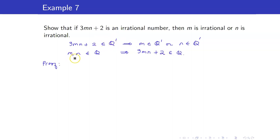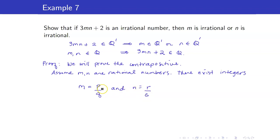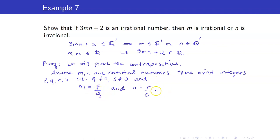For our proof, we state that we will proceed by proving the contrapositive. Hence, we assume that M and N are rational numbers and we want to show that 3MN plus 2 is also rational. Since M and N are rational, we can find integers P, Q, R, S such that Q is not equal to zero, S is not equal to zero, M is equal to P over Q, and N is equal to R over S. We now plug these into the expression 3MN plus 2.